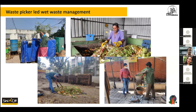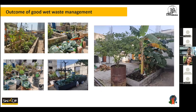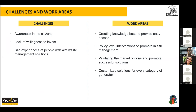The composting methods used by waste pickers include biogas units, organic waste converters (OWC), mesh composting, shredder-based composting, stack composting, and larger biogas units of around 130 kg capacity. One positive outcome shown is a terrace garden: wherever biogas is promoted, the highly nutrient-rich slurry from the biogas unit is used for terrace gardening, which has become a trend in the city, generating visible results.